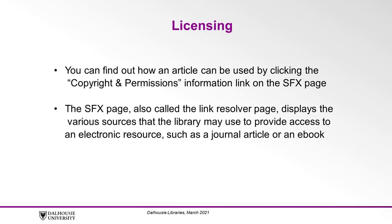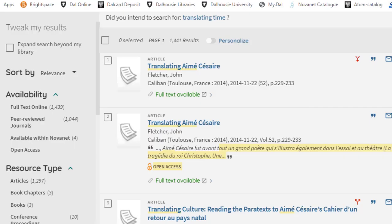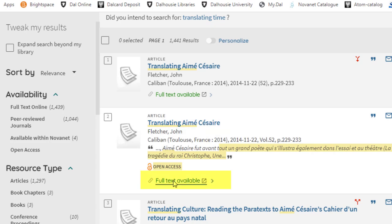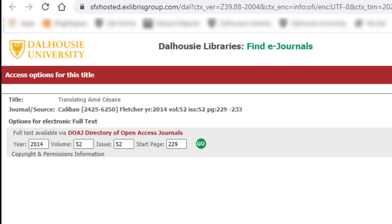You can find out how an article can be used by clicking the Copyright and Permissions Information link from an article's SFX page. The SFX page, often called the Link Resolver page, displays the various sources that the library may use to provide access to an electronic resource such as a journal article or an eBook. For example, I have found this article, translating MA Césaire, through a Novanet search. I have clicked the Full Text Available link from the Novanet entry and arrived at this SFXhosted.exlibrisgroup.com page.